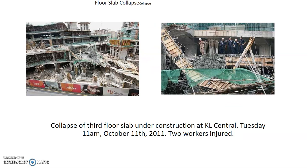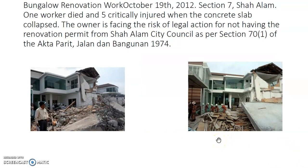Let's go through a few examples of failure in structures within Malaysia. We have the collapse of the third floor slab under construction at Kuala Lumpur Central, which occurred in 2011. This failure involved two workers who were injured. Another example is a bungalow renovation at Section 7, where the owner faced the risk of legal action for not having a renovation permit from Shah Alam City Council under Section 70(1) of Akta Parik Jalan dan Bangunan 1974.